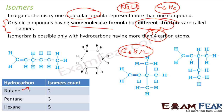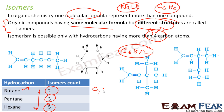For butane, there are two isomers. For pentane, there are three. For hexane, there are five. There is no direct formula to get this — you have to actually draw them. For butane, you can draw the structure and will see that it can be drawn in two ways.